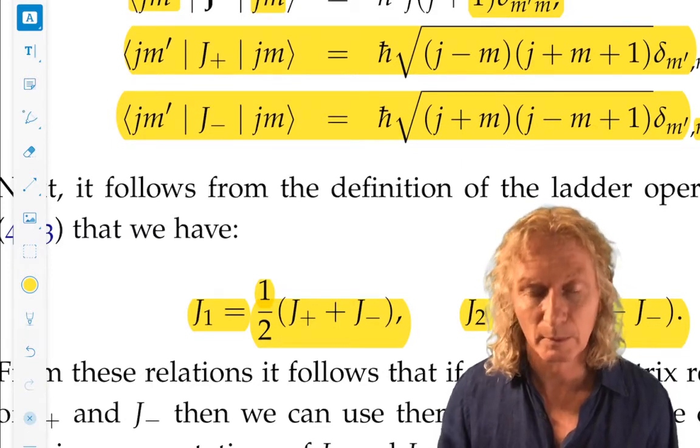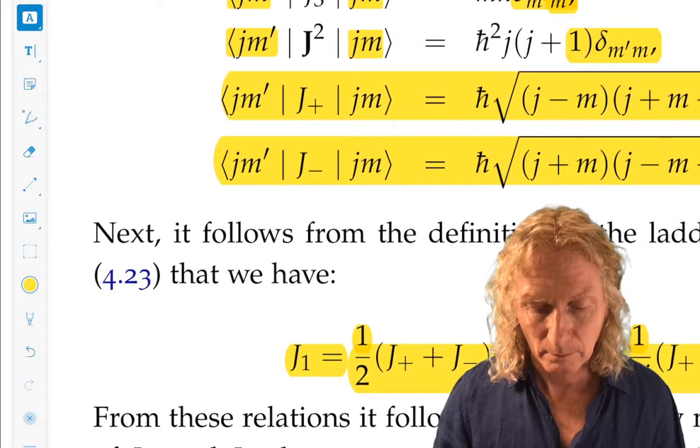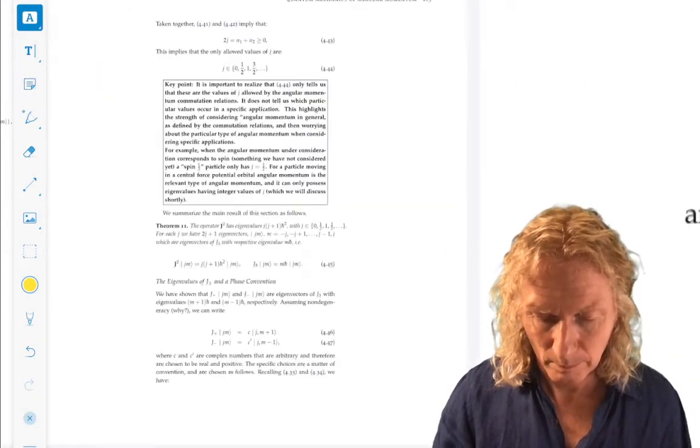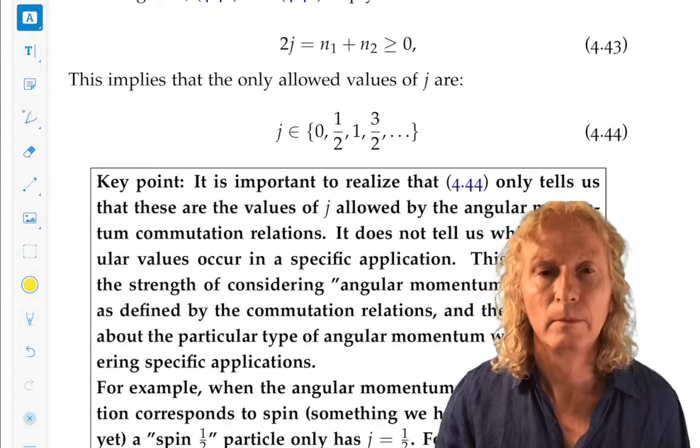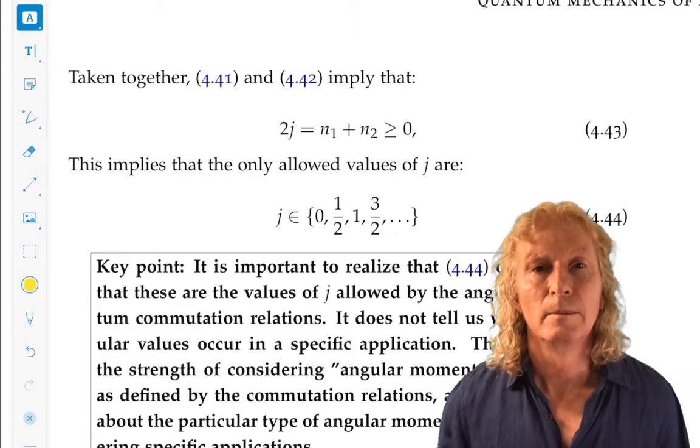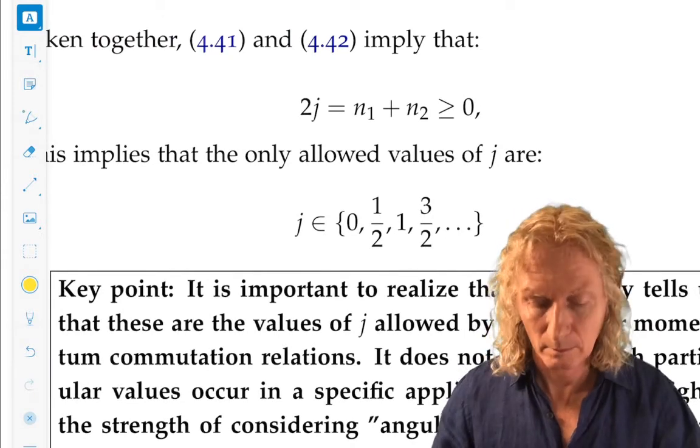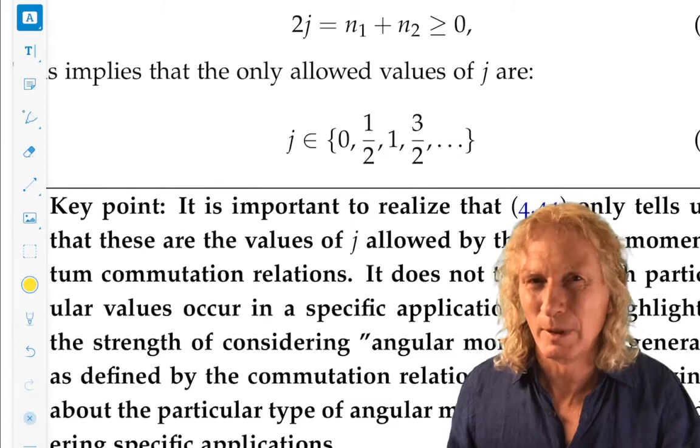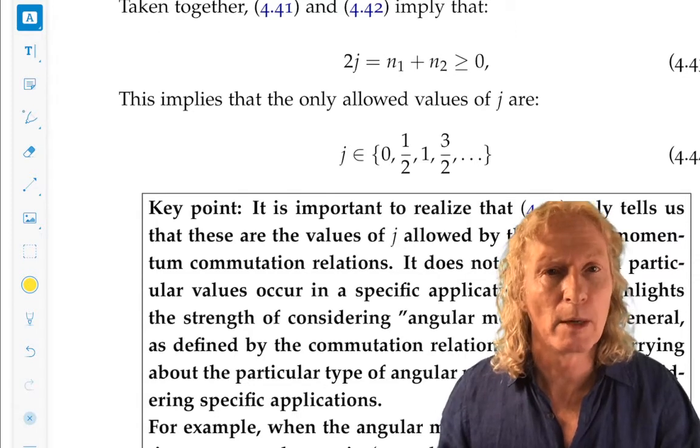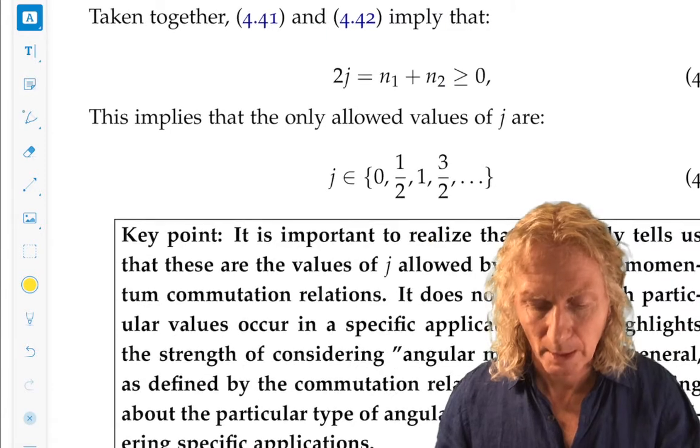Calculating the matrix representations for a fixed j, which fixes a basis, because m goes minus j to plus j, incrementing by one. And we see easily, I hope easily, how to compute the matrix representation for any of the angular momentum operators, including the raising and lowering operators, or ladder operators, j plus and j minus.